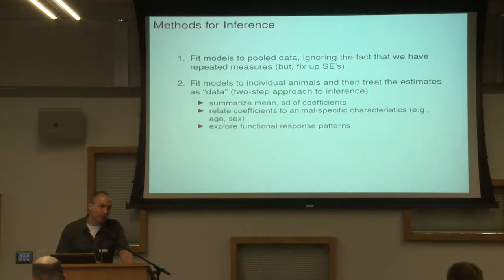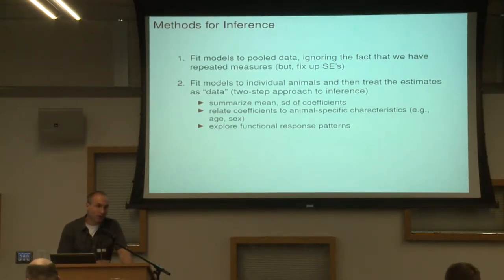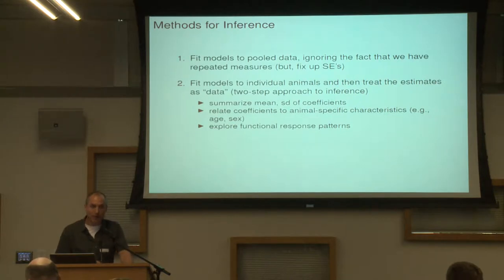You could take the mean of the different coefficients to say, on average, do individuals tend to select for higher elevations or lower population densities? Or you could take those coefficients and model them as a function of individual-specific characteristics — sex of the animal, the age of the animal — in a second step. Or you could use those coefficients to explore functional response patterns, which I'll talk about in a second.